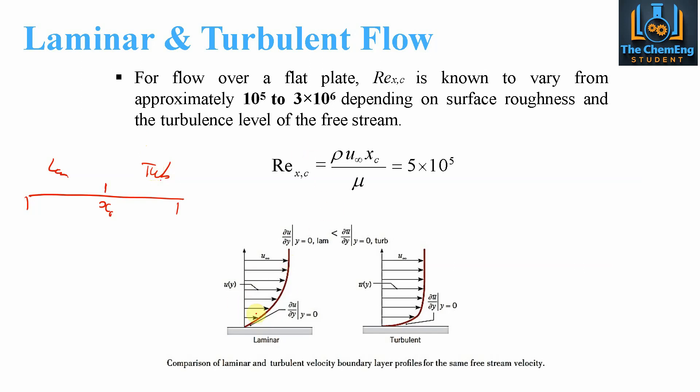You can see these profiles in a little bit more detail here. This is done under partial differentials, a comparison of the laminar and turbulent velocity boundary layer profiles for the same free stream velocity. We have this no slip velocity, where y equals zero and the partial differential du by dy is zero as well.